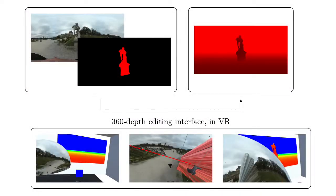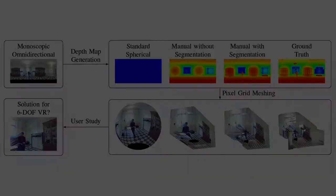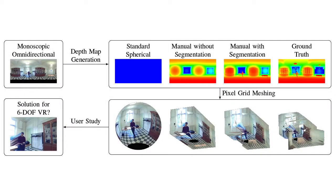To do so, we demonstrate an interface that allows an operator in VR to easily create a dense depth map from a given 360 image. We also present the results of a user study evaluating user comfort under different viewing conditions and when using depth maps with varying levels of accuracy.